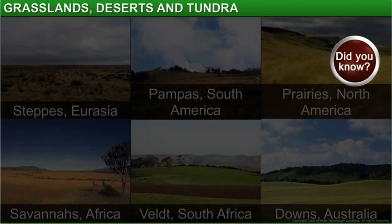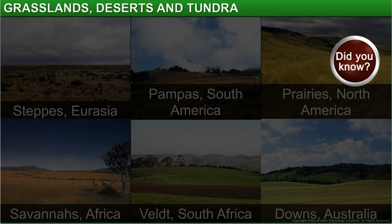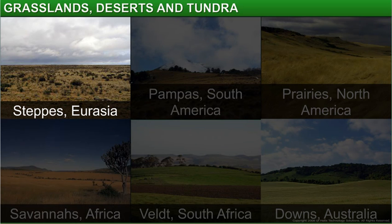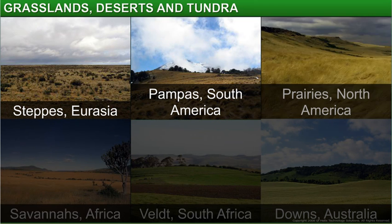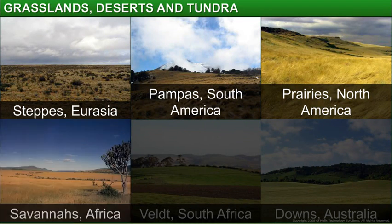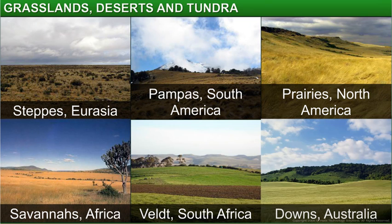Did you know that in different continents, grasslands are called by different names? The grasslands in Eurasia are called the steppes. In South America, they are called the pampas. In North America, the prairies. In Africa, the savannah. In South Africa, the veld. And in Australia, the downs.